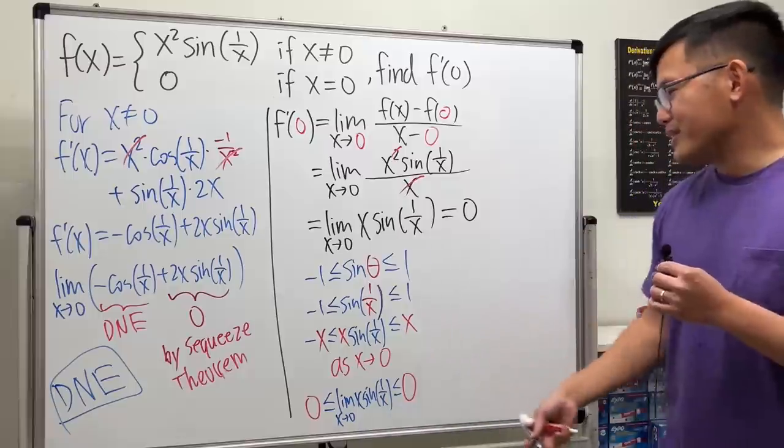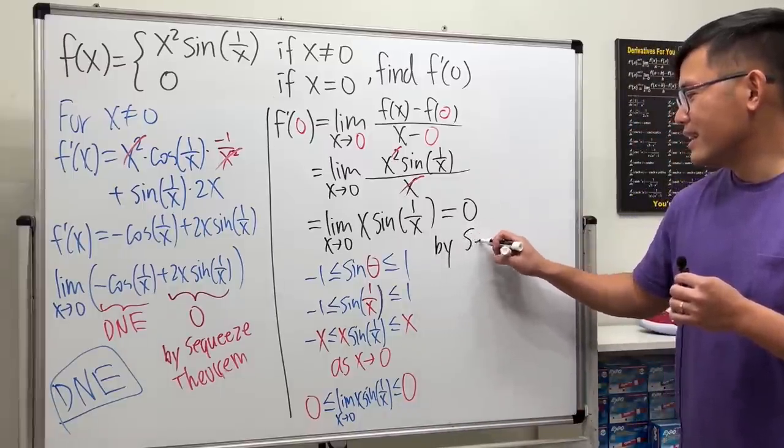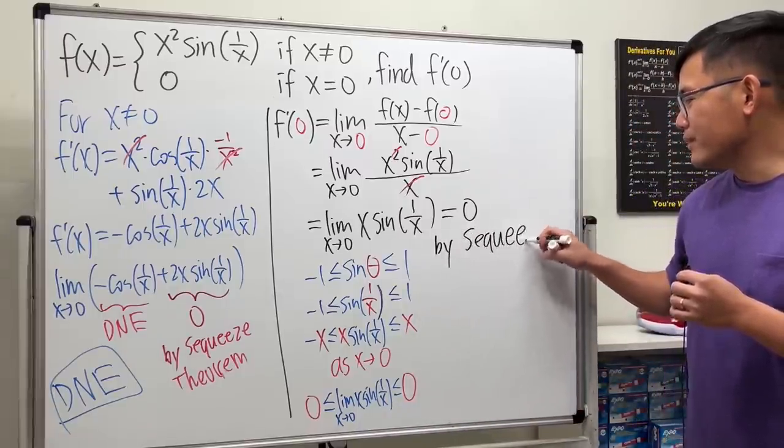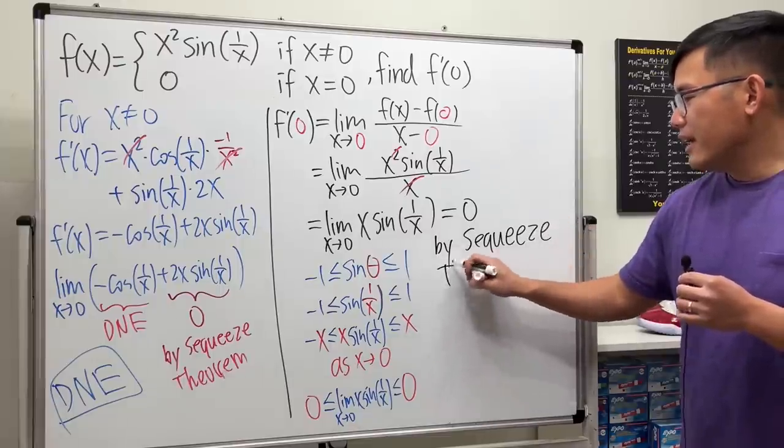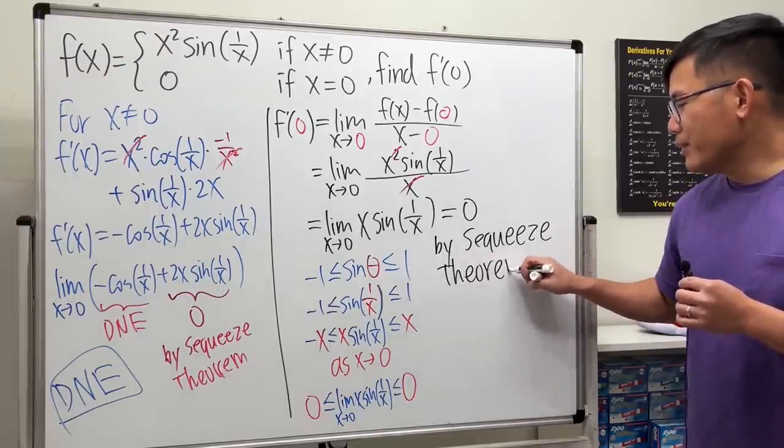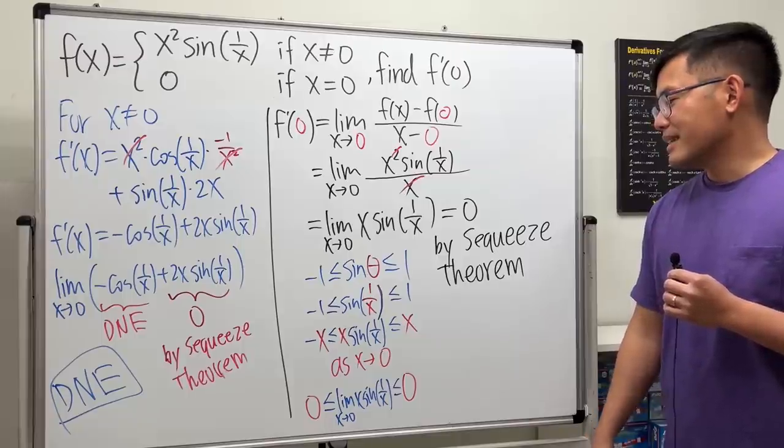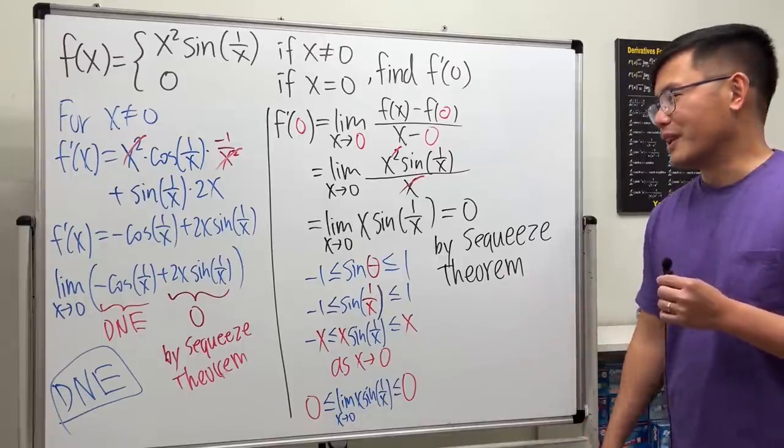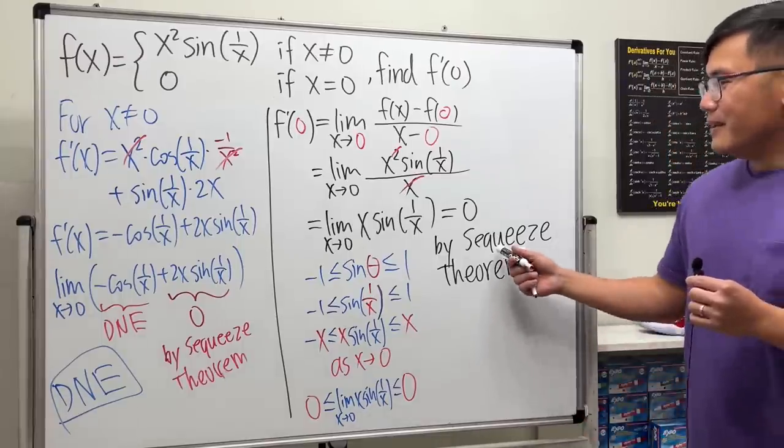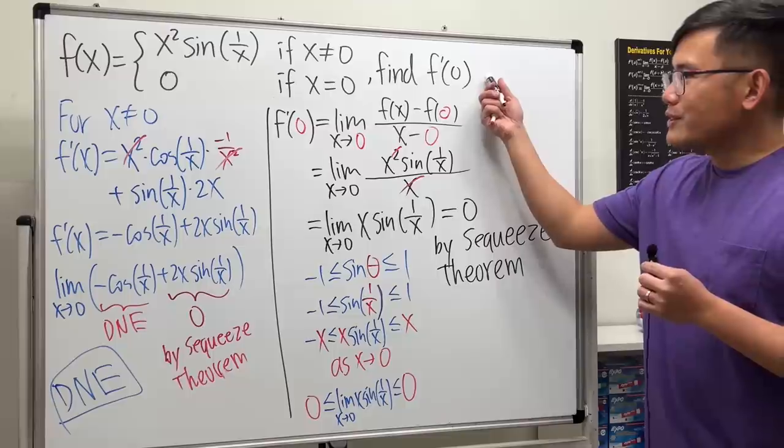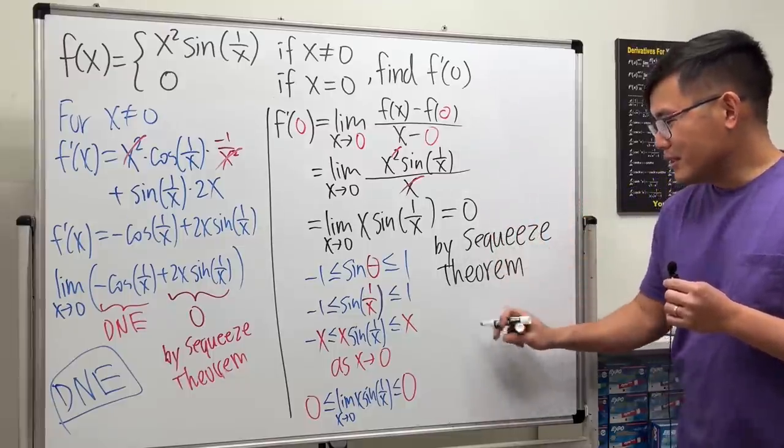And when you do this, this right here, it's the squeeze theorem. So, let me write this down. And some other books, let me also call this the sandwich theorem. Yeah, you just pick your favorite name for this. So, as we can see, f prime of 0 is just equal to 0. And let me just write that down for you guys.